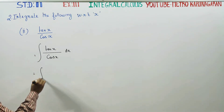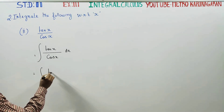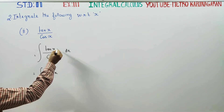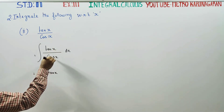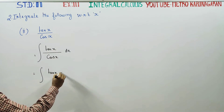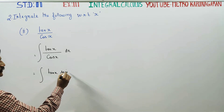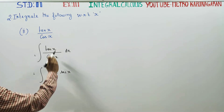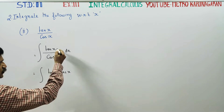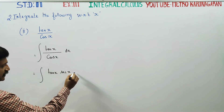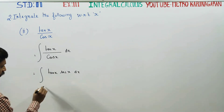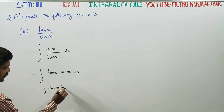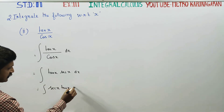Integration of tan(x) is there. Now, 1 by cos — in trigonometry, 1 by cos, when cos is in the denominator, that can be changed to secant x. So 1 by cos can be changed to secant x. So we get secant x tan x dx.